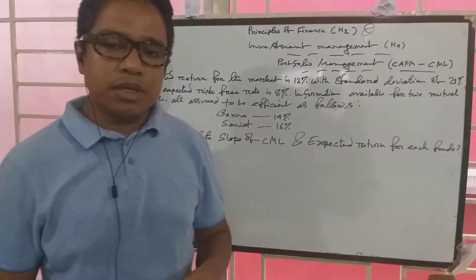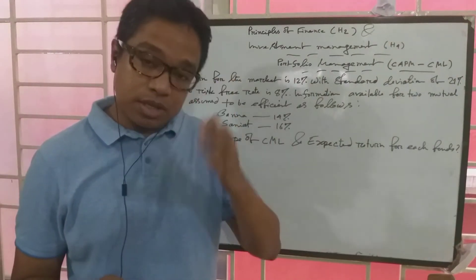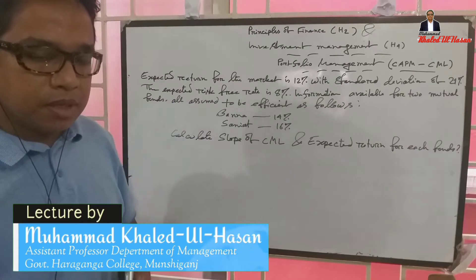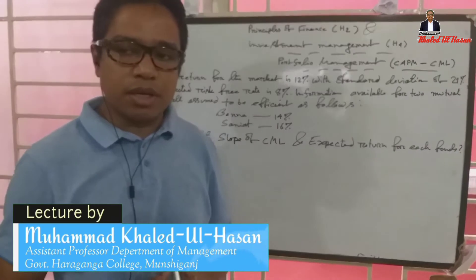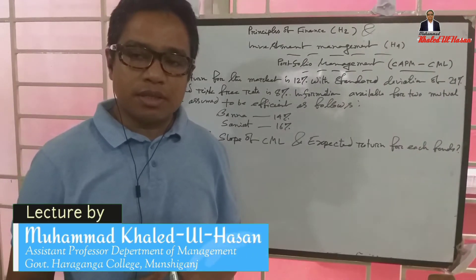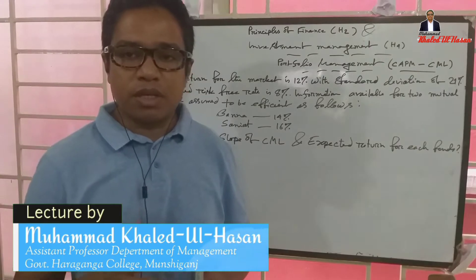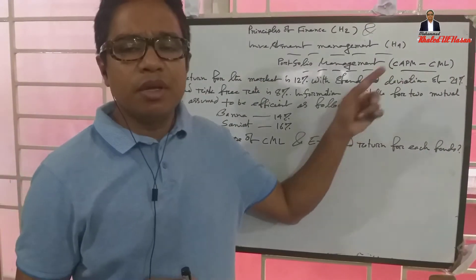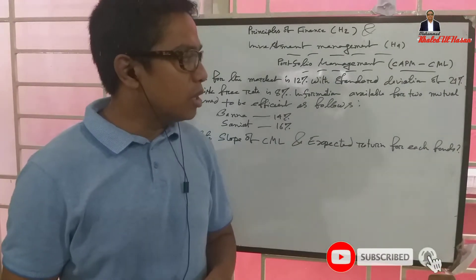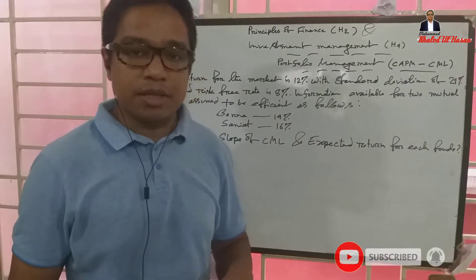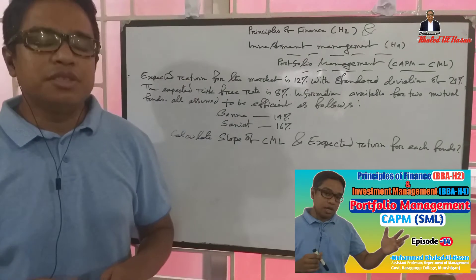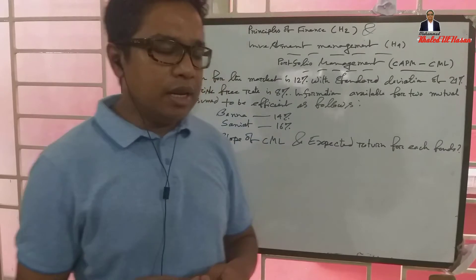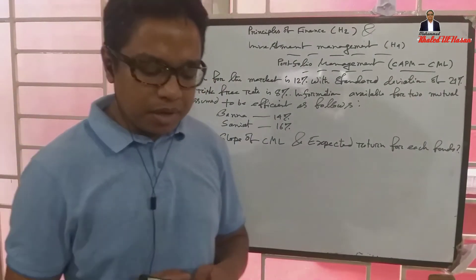We are going to do this in 2nd and 4th year — Principles of Finance and Investment Management. This is the last class called Portfolio Management. We have CPM — Capital Assets Pricing Model. This model includes SML — Security Market Line — and now we are going to do CML — Capital Market Line.